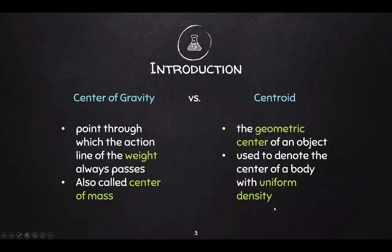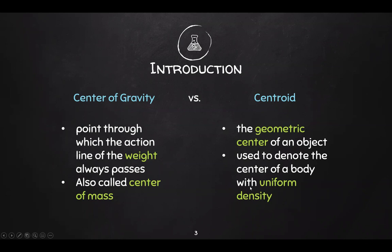Centroid is also used to denote the center of a body with uniform density. When objects have uniform or homogeneous density, the centroid is actually the same as the center of gravity — so the two terms become interchangeable. That equivalence only applies to objects with uniform density. For our topic, we're going to focus on objects with uniform density, so center of gravity and centroid will be the same thing.